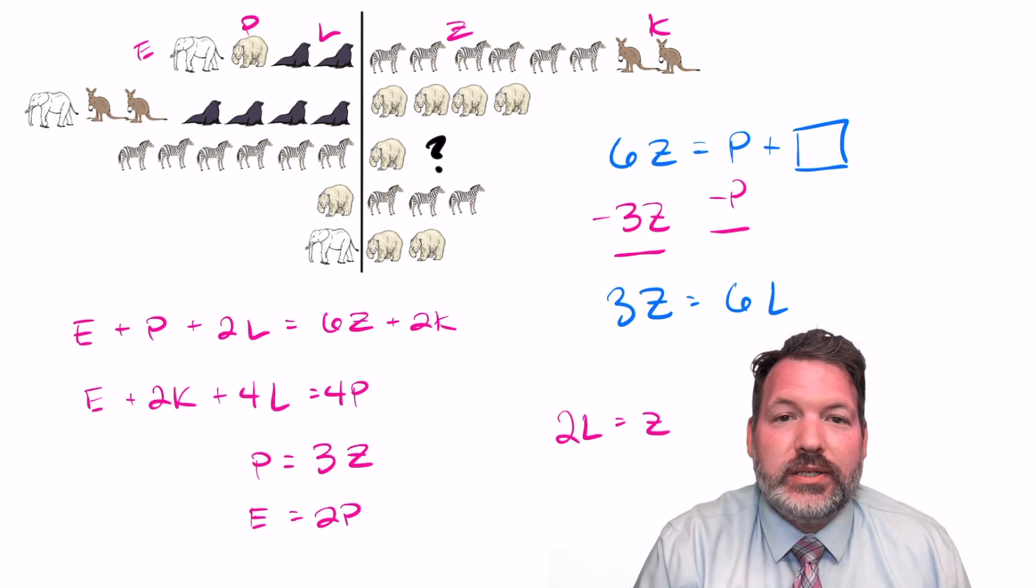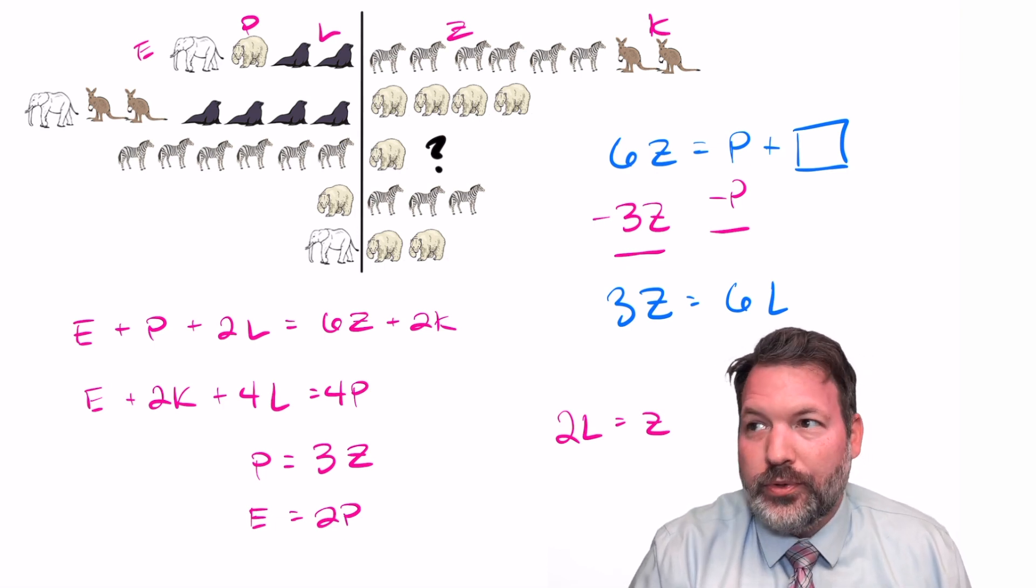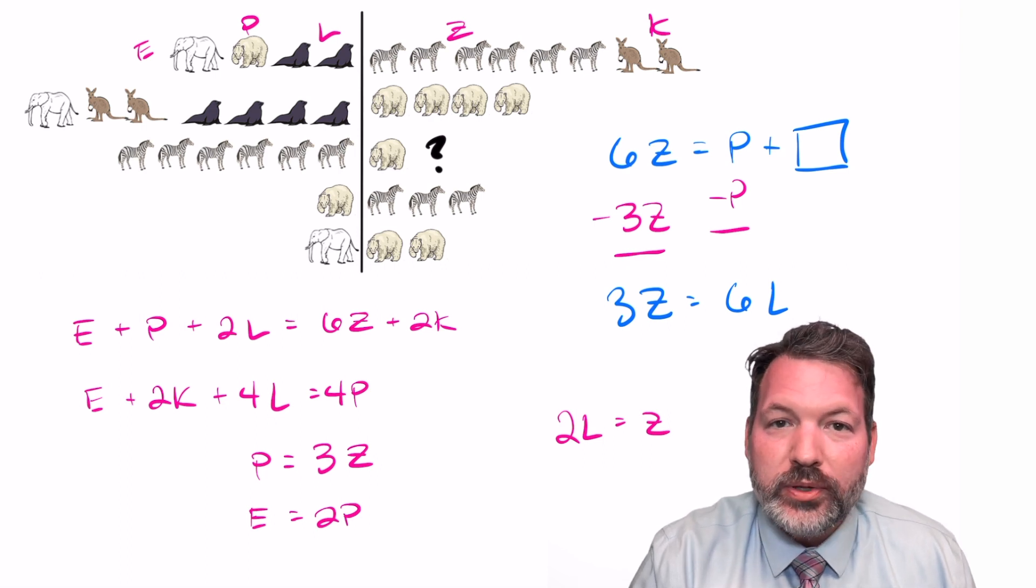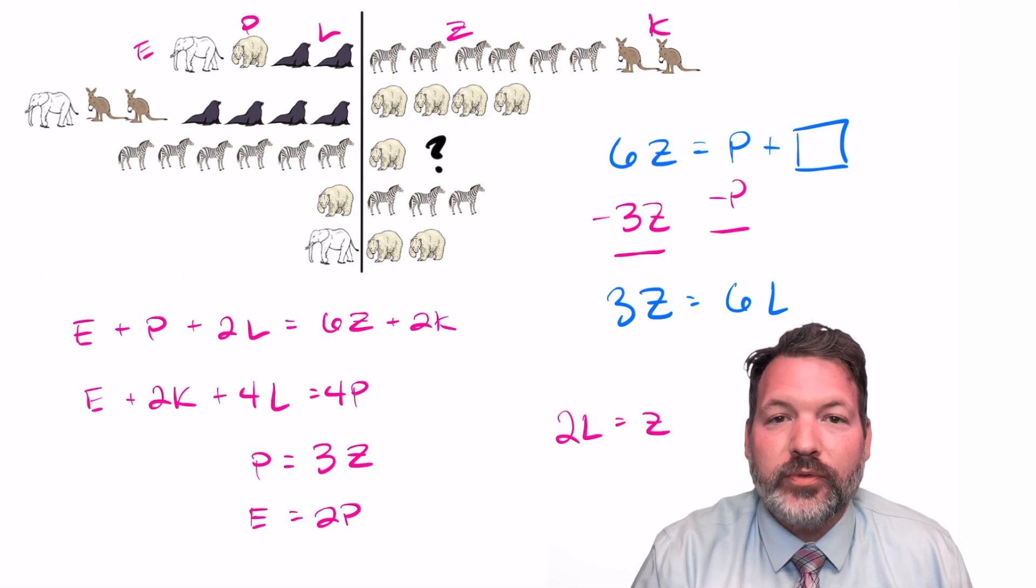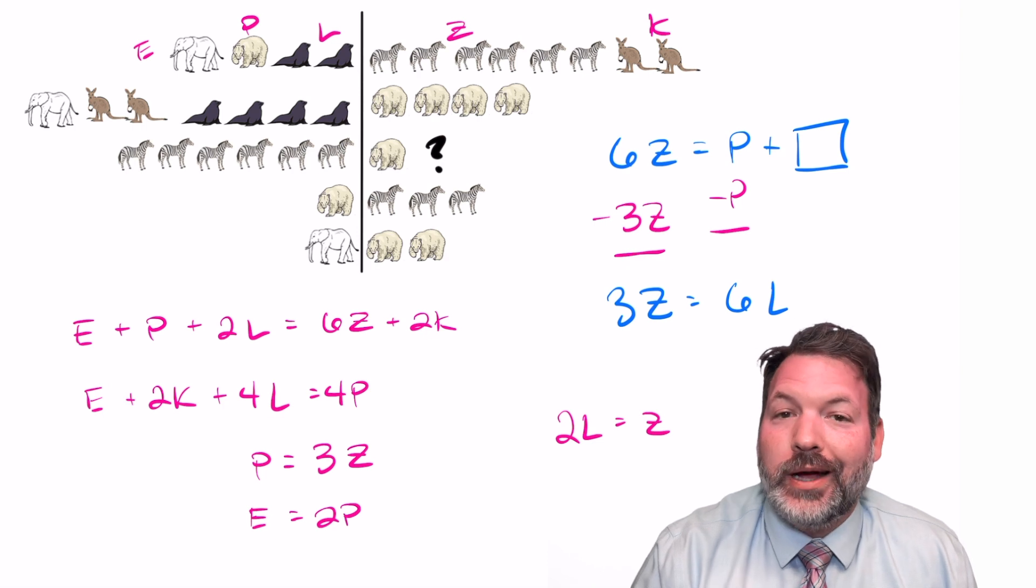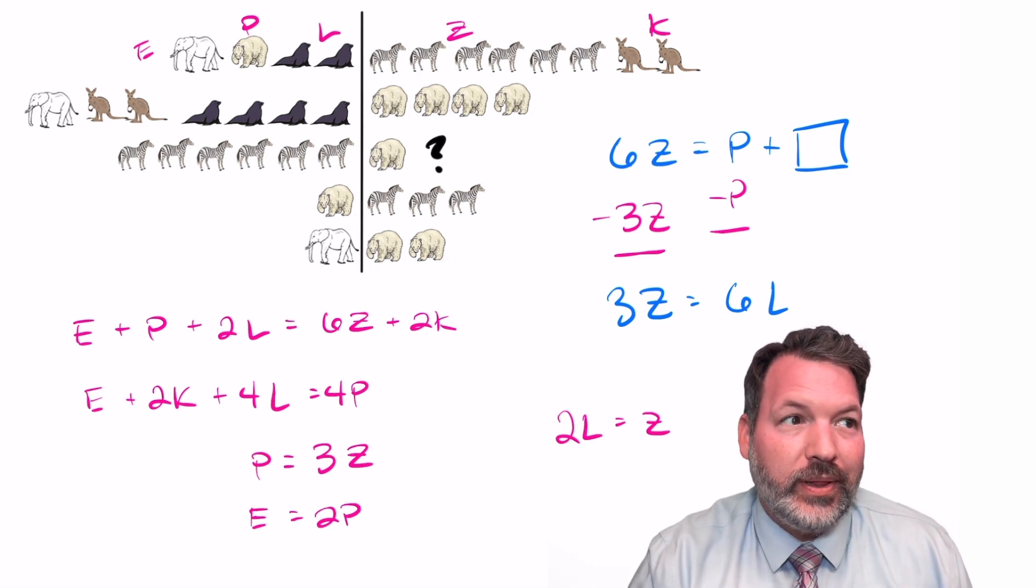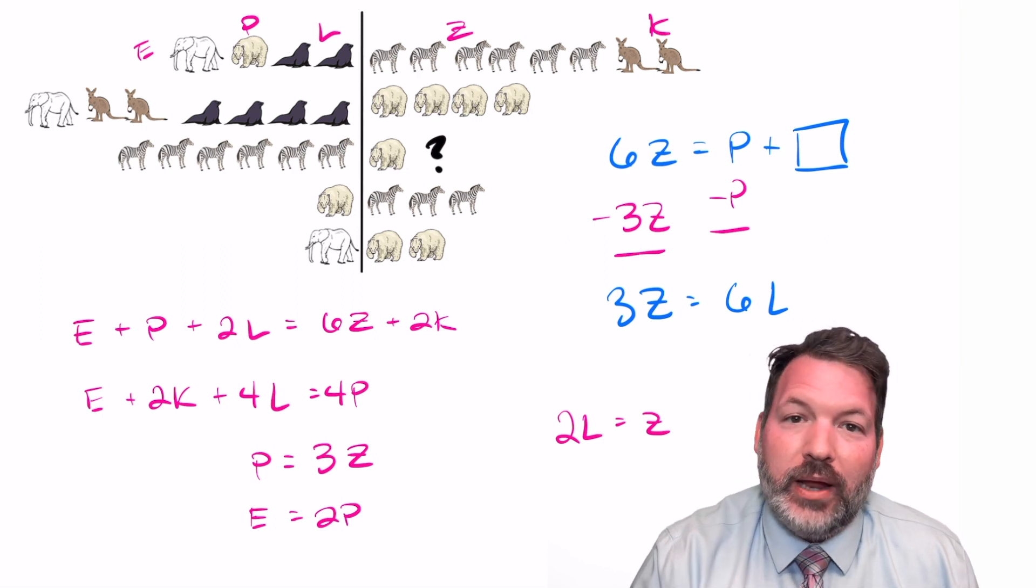When we move six Z or three L or two P or whatever, it doesn't really seem any different than any other quantity we might move. And so it becomes easier to make mistakes. For example, thinking we've used a property of equality when actually the things we've added to both sides of an equation or subtracted from both sides of an equation are not actually equivalent. Basically, our tool has gotten more powerful, but therefore our mistakes have also gotten more costly.